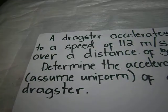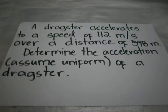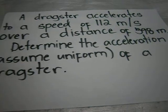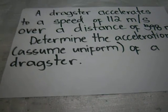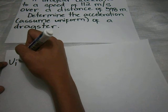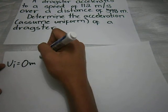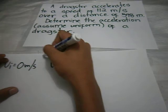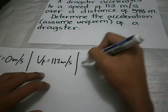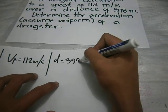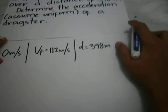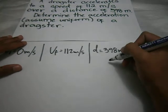We will go to the next problem. A dragster accelerates to a speed of 112 meters per second over a distance of 398 meters. Determine the acceleration, assuming uniform acceleration. Given: initial velocity equals 0, final velocity equals 112 meters per second, and distance is equal to 398 meters. We will find the acceleration.